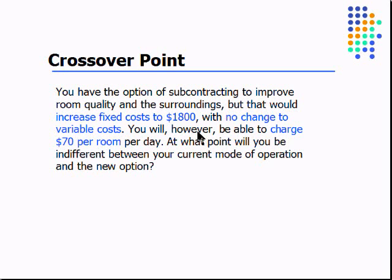But no change in variable cost. Now that we've got a nicer place, we can charge $70 per room per day. Well, at what point are we going to be indifferent to our current mode of operation and the new option? How many rooms do we have to rent before we really don't care? Either way, we're going to have the same profit. And that will be called the crossover point.